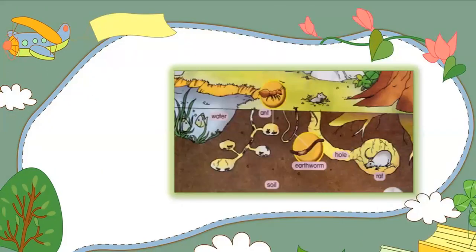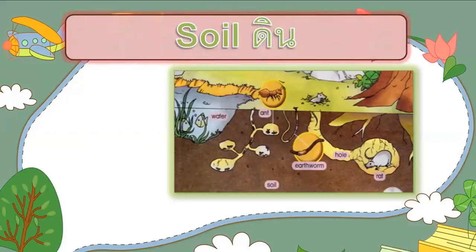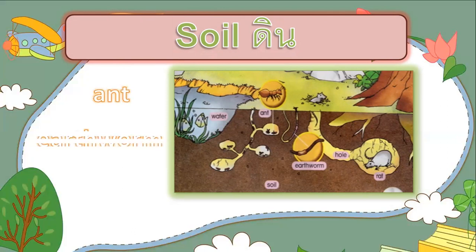How about earthworm? What habitat is earthworm? In the soil. Other animals that live in the soil are ant, earthworm, and rat. These animals live in the soil.